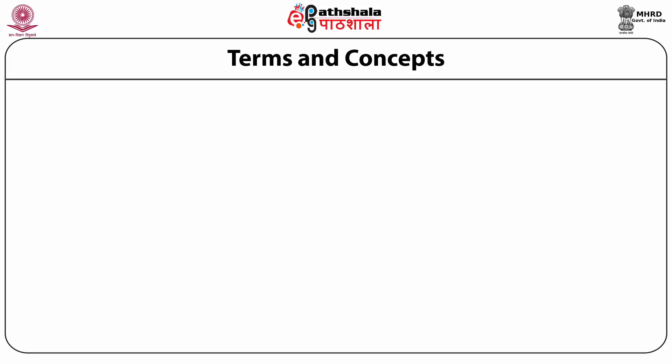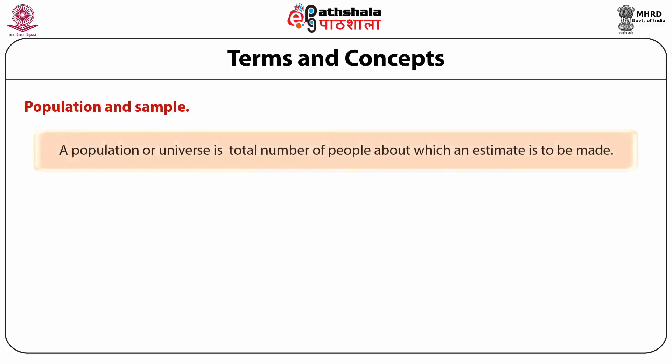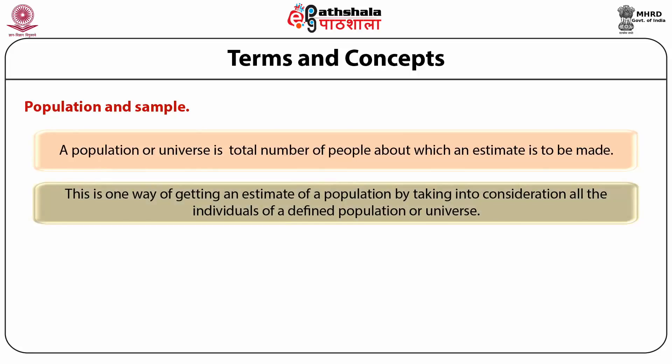Let's understand the different terms and concepts used in statistics. A population or universe is the total number of people about which an estimate is to be made. For example, if one wishes to find out the mean height of adult individuals, both male and female, of a village, city, country, or continent, then the best approach is to measure all the adult males and females of that specific area and find out the mean. This way of getting an estimate by considering all individuals of a defined population is one approach, and the estimate of a population is called a parameter.